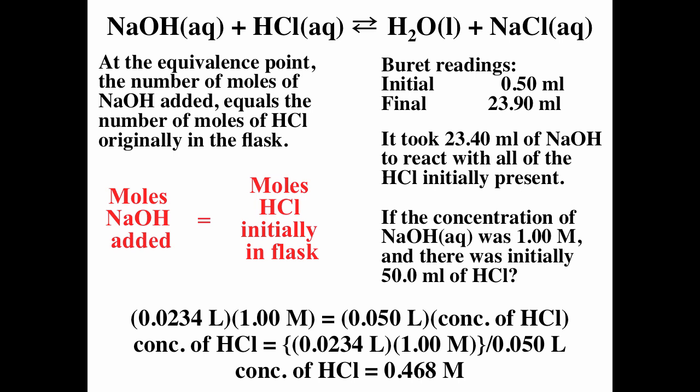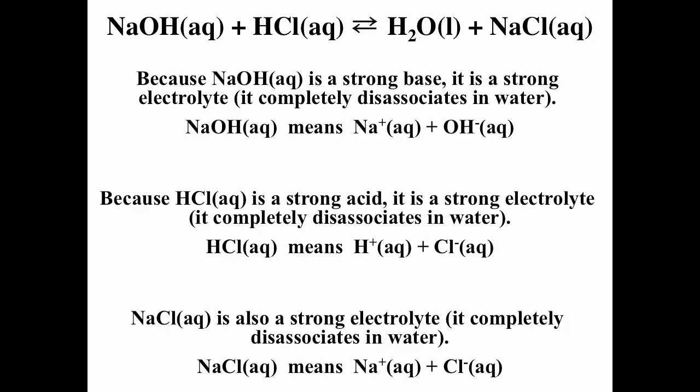For titrations, the equilibrium constants must be very large. To determine the equilibrium constant, it's helpful to find the net ionic equation. You must identify the spectator ions. For the reaction sodium hydroxide + HCl → water + sodium chloride: NaOH is a strong base, so 1 M NaOH means 1 M Na⁺ and 1 M OH⁻. HCl is a strong acid and completely dissociates, so 1 M HCl means 1 M H⁺ and 1 M Cl⁻. With a weak acid, you cannot break it into ions — it is present mostly as molecules.